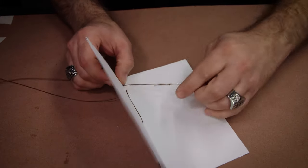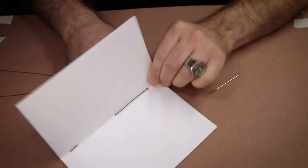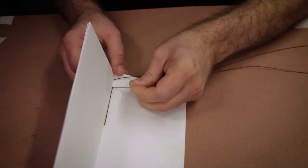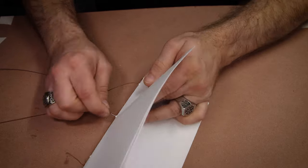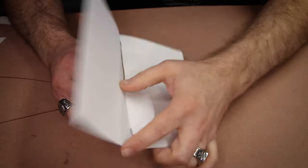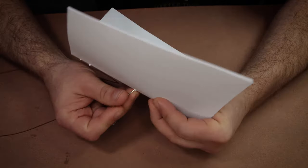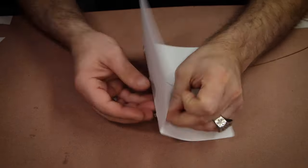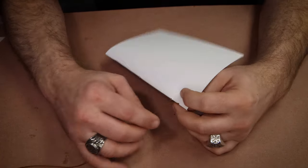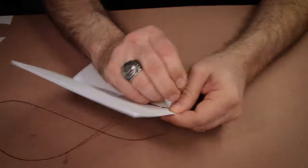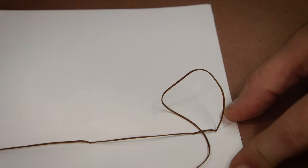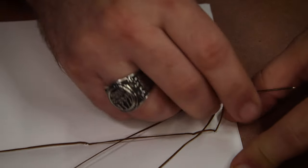Once we get to the other end, we're just going to turn around and work our way back down. You should end up with a line of thread on the inside and outside of the signature. We want the thread snug without it cutting into the paper. Once you get back to the original holes, just tie off your thread on the inside, then push the thread back through to the outside. Now we're back at our starting point.